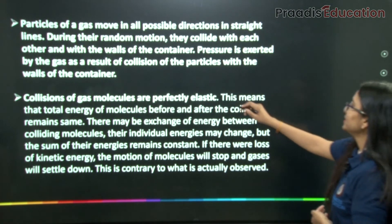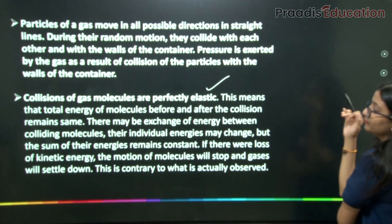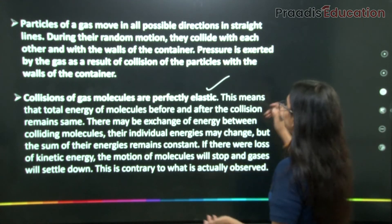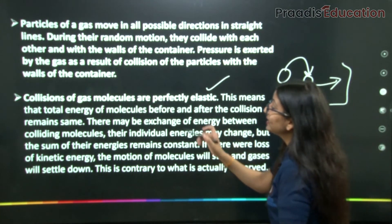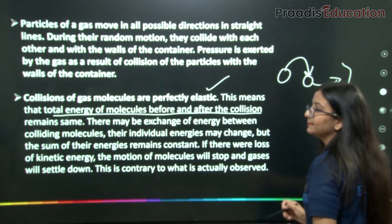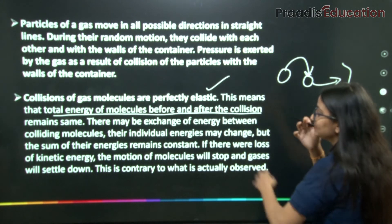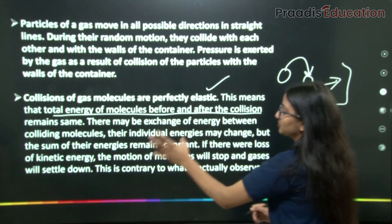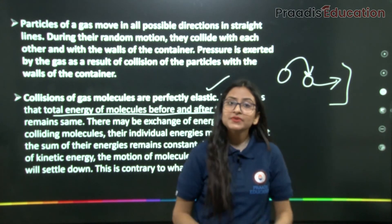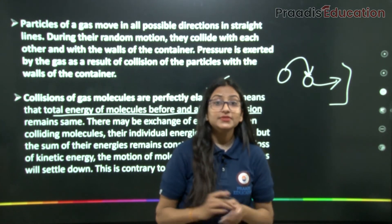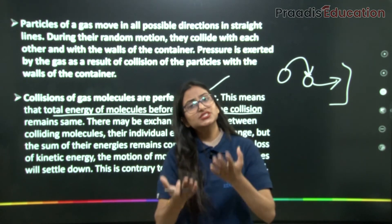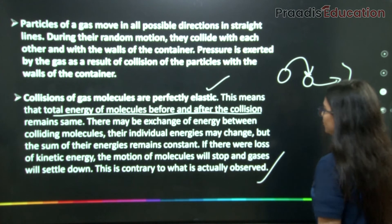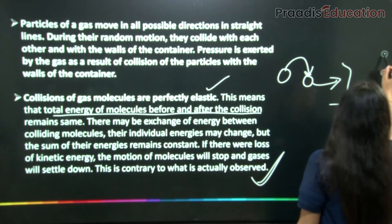Postulate 5: Collisions of gas molecules are perfectly elastic. This means the total energy of the molecules before and after collision remains the same. There may be exchange of energy between colliding molecules — individual energies may change — but the sum of their energies remains constant. If kinetic energy were lost, molecular motion would stop and gases would settle down, which is never observed.